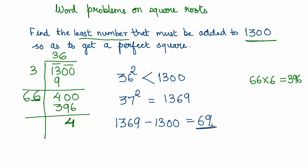So 69 is the least number that must be added to 1300 to give you a perfect square, and the square root of that is 37. Let me just write down the square root of 1369 would be 37.